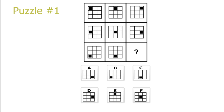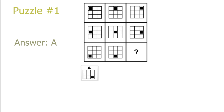Puzzle number 1. Each picture is a 3x3 grid showing a miniature version of the IQ test itself. Since it's the last picture to the right and the last picture downwards, we know that the solution will have a black square in the most right and most downwards position. So the answer is A.